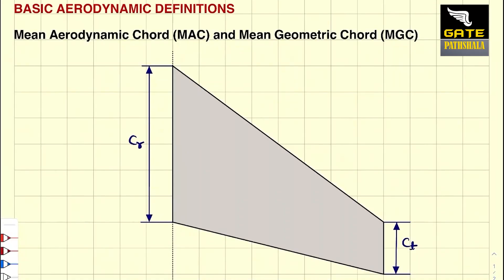Hi there. To locate the mean geometric chord of the wing, let us consider a trapezoidal wing as shown on screen. It is a swept back wing, which is a trapezoidal wing also. So it has the root chord CR and the tip chord CT.